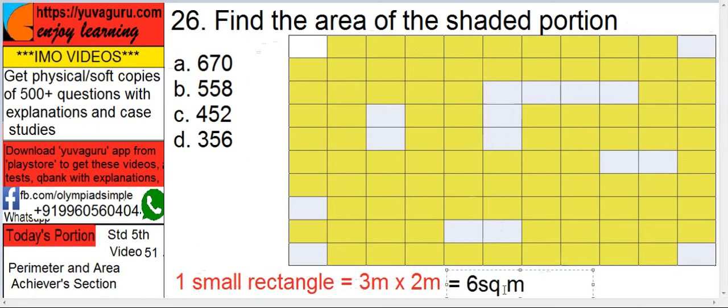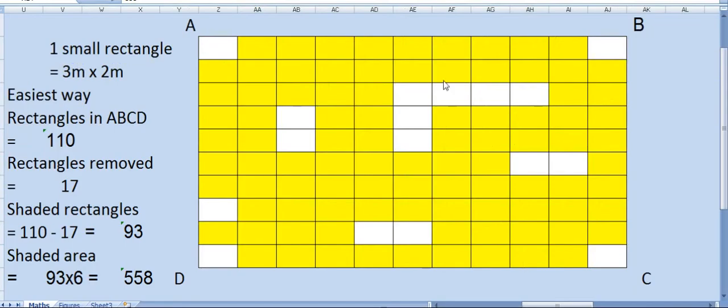Now only we have to find out the shaded portion. It means we can do it two ways. We can directly count it. That is also easy. Counting these yellow ones is difficult because they are too many. Easiest way is first find a rectangle ABCD.